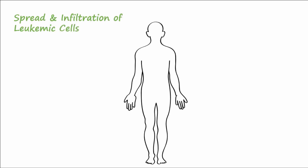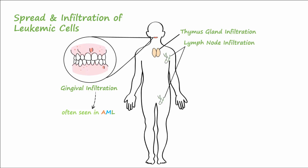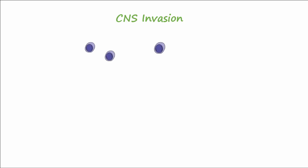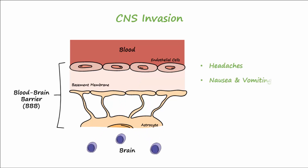If the leukemic blast cells remain in the blood circulation, they can spread to and infiltrate parts of the body. Gingival infiltration is often seen in AML, especially in the acute monoblastic and myelomonocytic forms. Infiltration of the thymus gland and lymph nodes is seen more frequently in ALL — this makes sense because, just like healthy lymphocytes, B and T lymphoblasts like to go to lymph organs. CNS invasion can occur in both AML and ALL as leukemic cells cross the blood-brain barrier, bringing about headaches, nausea, vomiting, and papilledema, which is swelling of the optic nerve inside the eye.